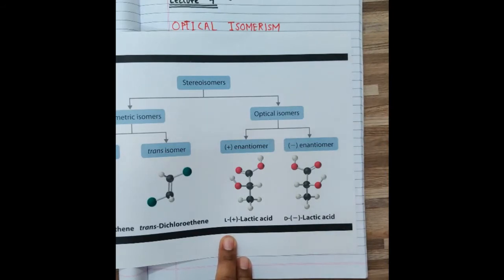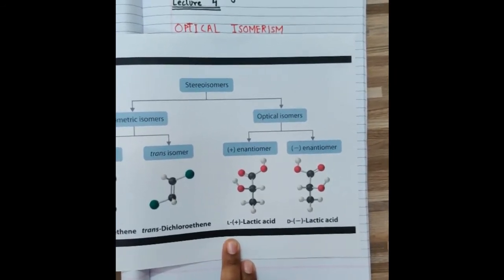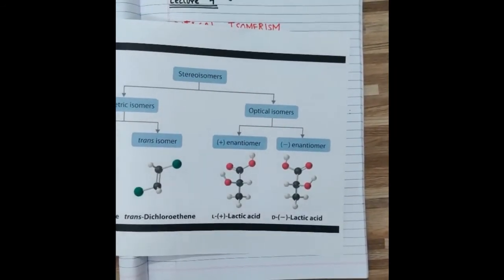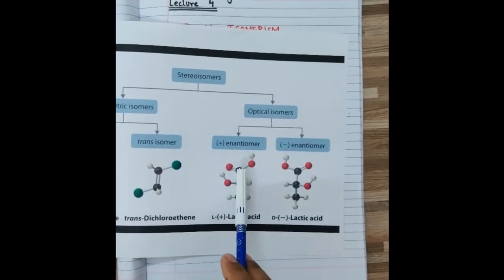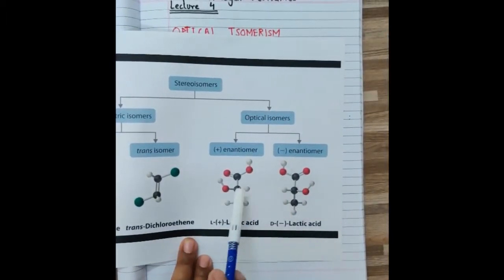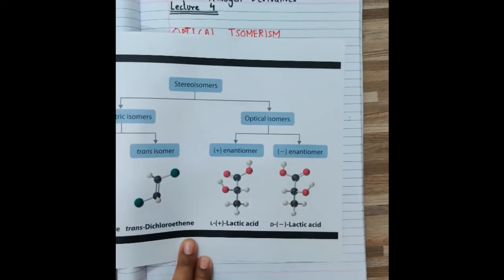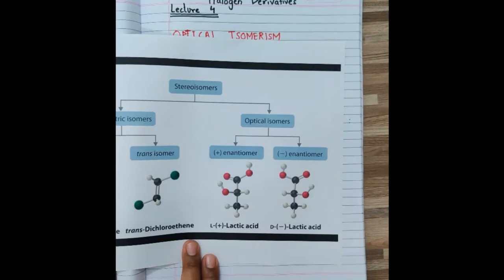Let's look at one example: lactic acid. Lactic acid is CH₃CHOHCOOH. The three-dimensional structure of lactic acid is given here, and these are optical isomers. Let's find out why they are optical isomers.